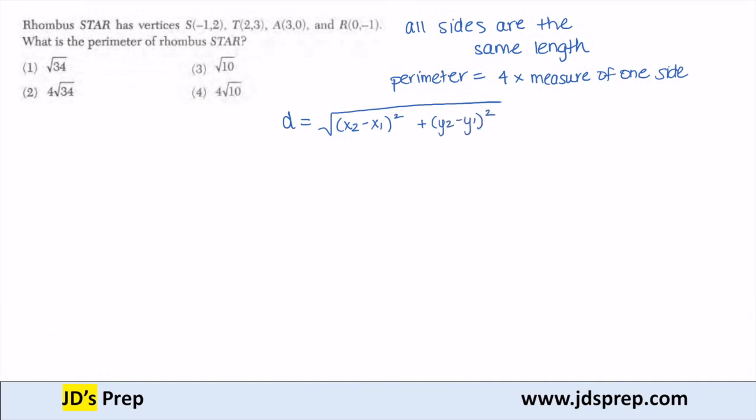You can pick any two points that you'd like. Let's just pick the first two to make things easier. So I have point S, which is (-1, 2), and I have point T, which is (2, 3).